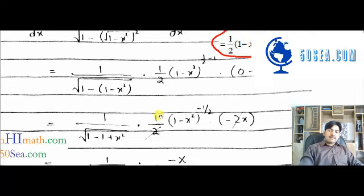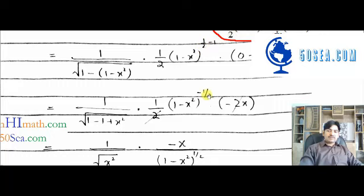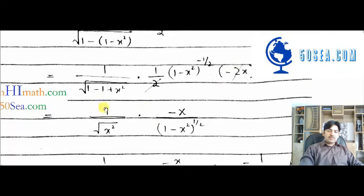When we take the derivative of x, we get 1. In the next step, 1 over — the minus 1 multiplied by 1 gives minus 1, and minus times minus gives plus x squared. So after simplification, this minus 1/2 power gives minus 2x, and the 2s cancel out, leaving minus x over (1 minus x squared).